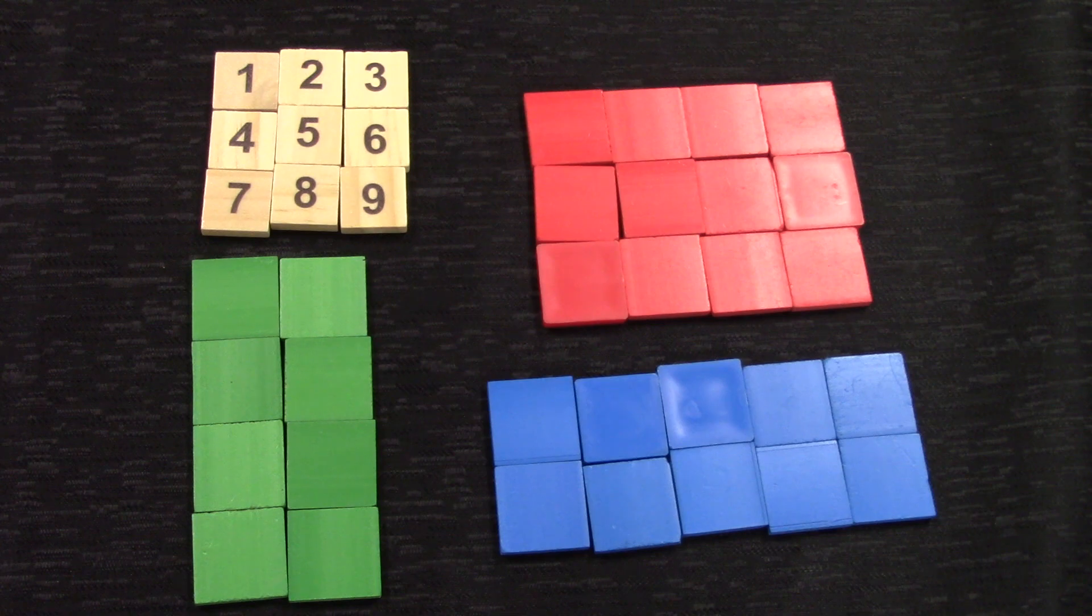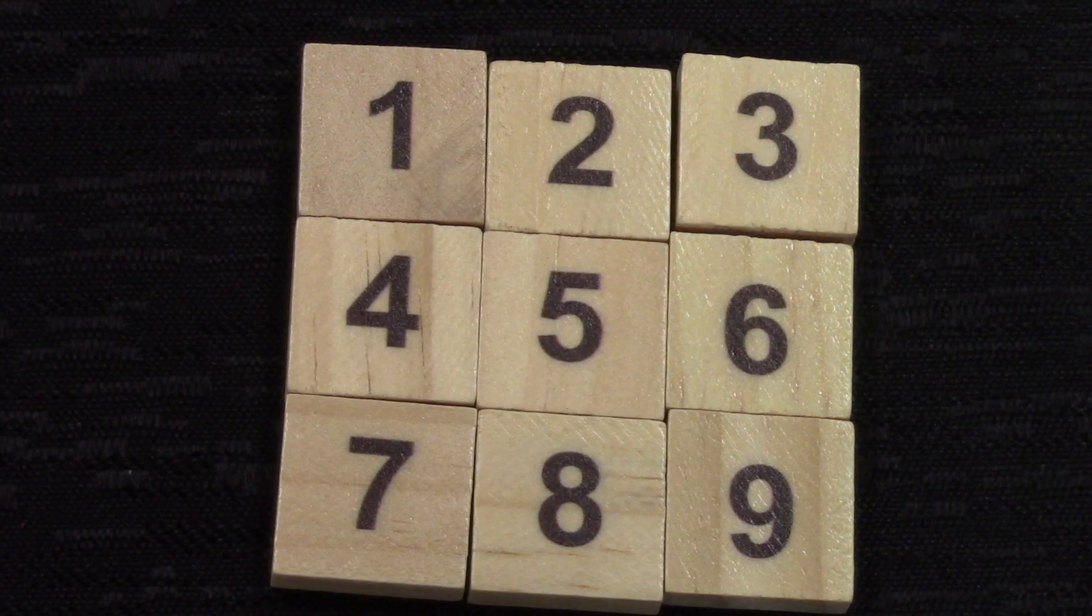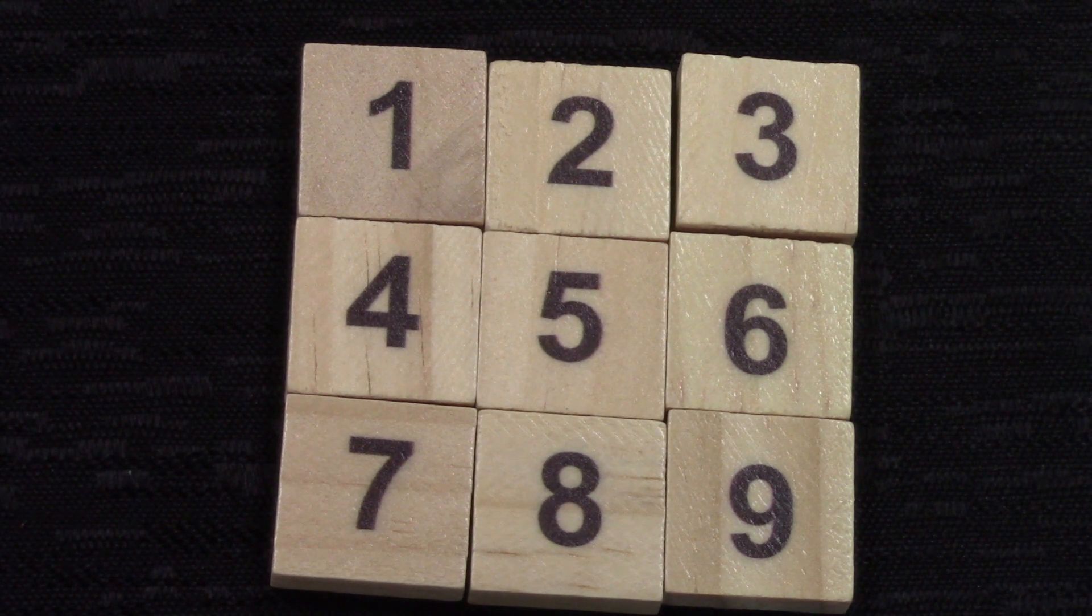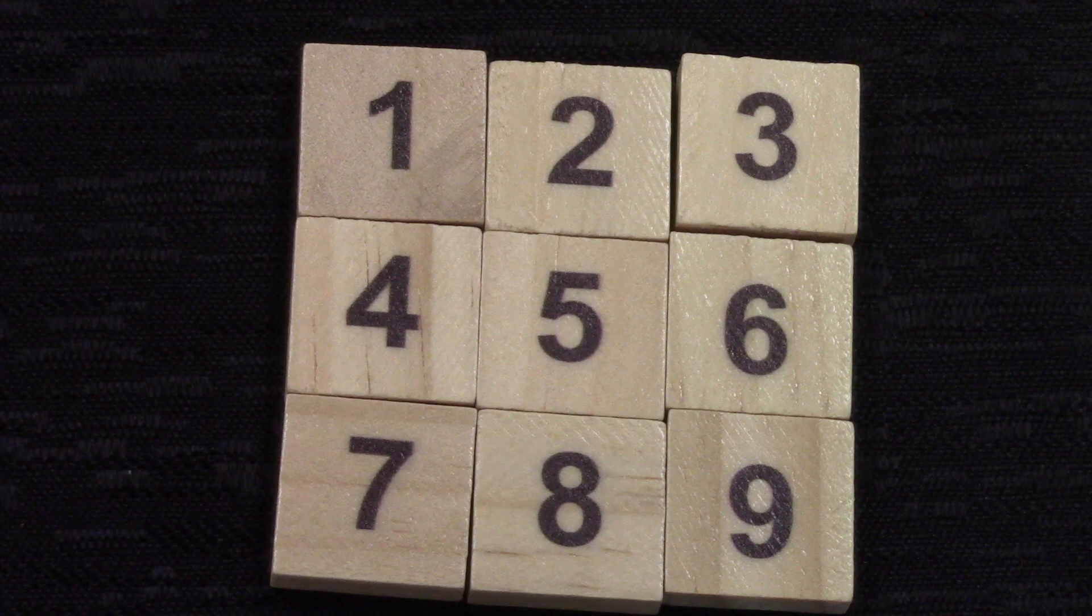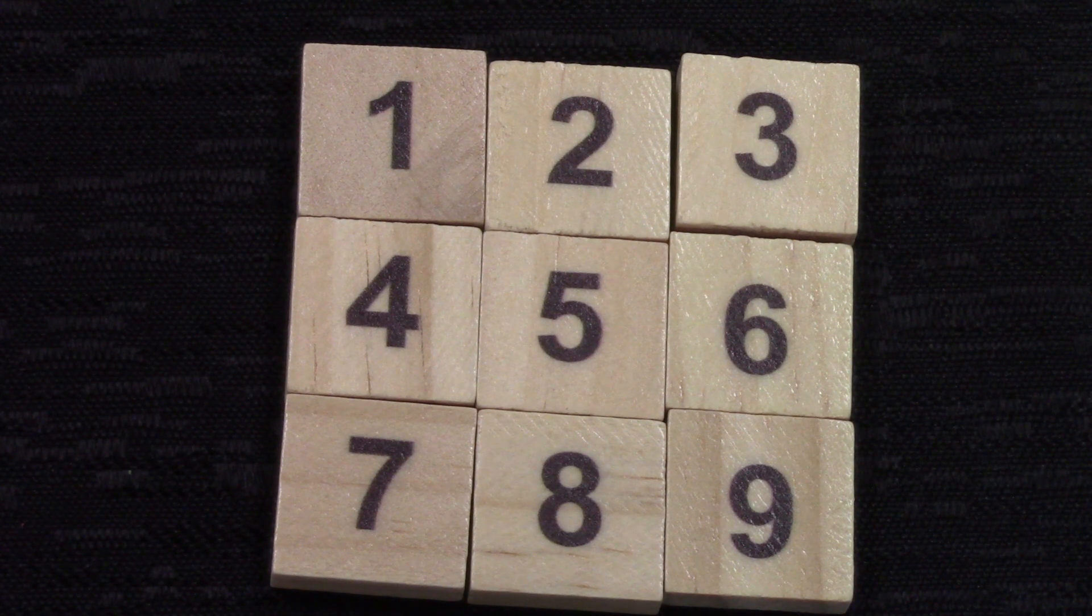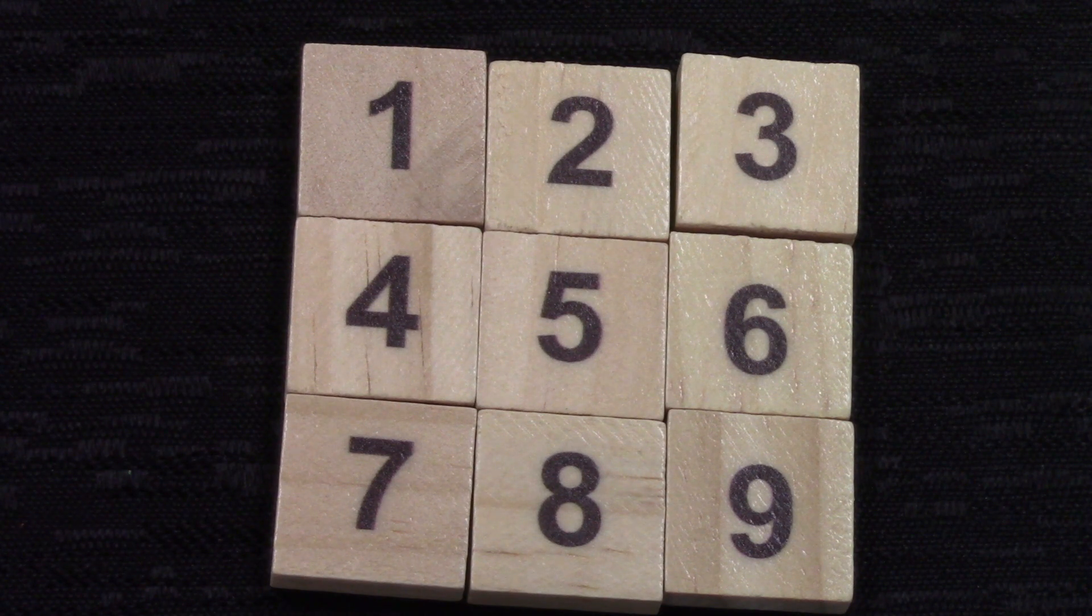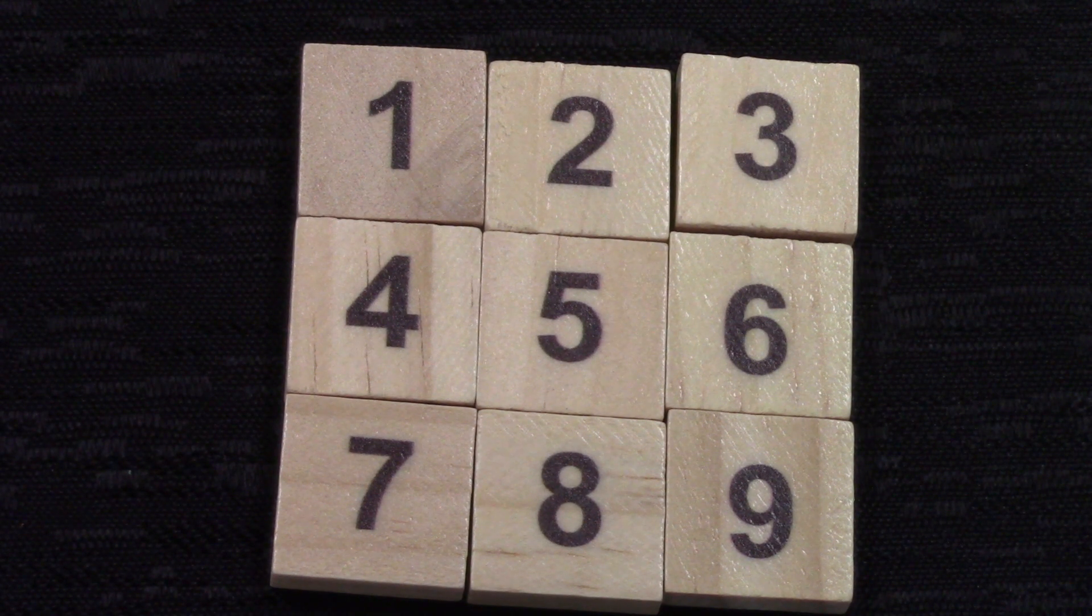Let's take a closer look at each one of our arrays. The numbered blocks in this array really help us see that when you have three rows with three in each row, there would be nine altogether. Three times three equals nine.